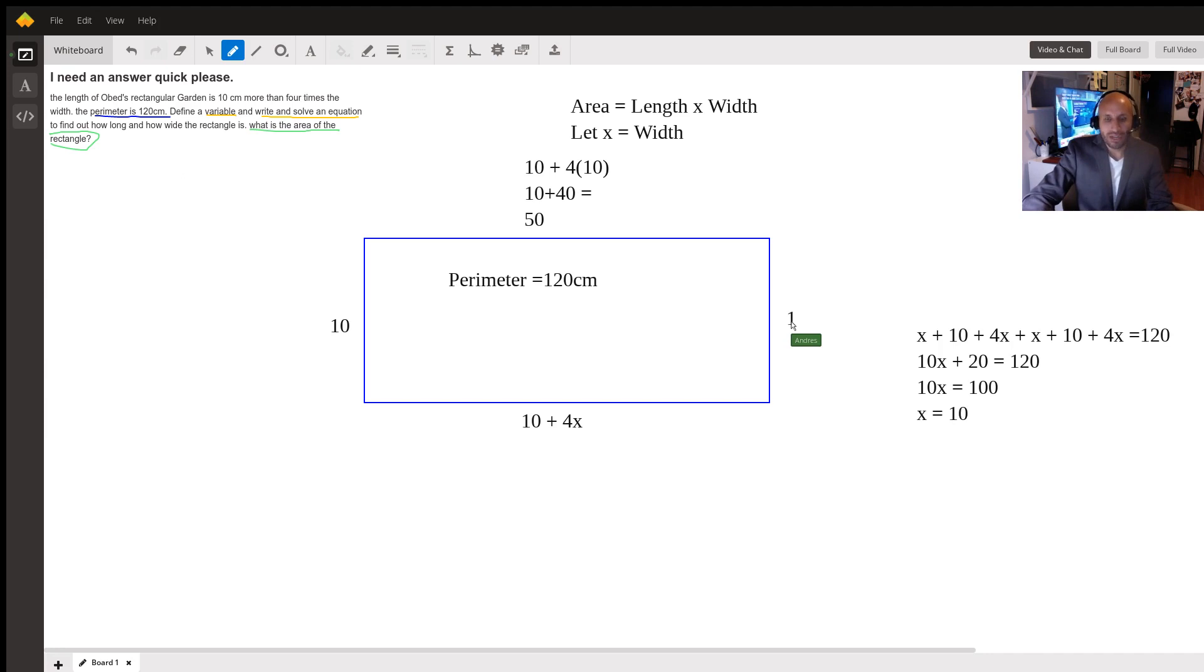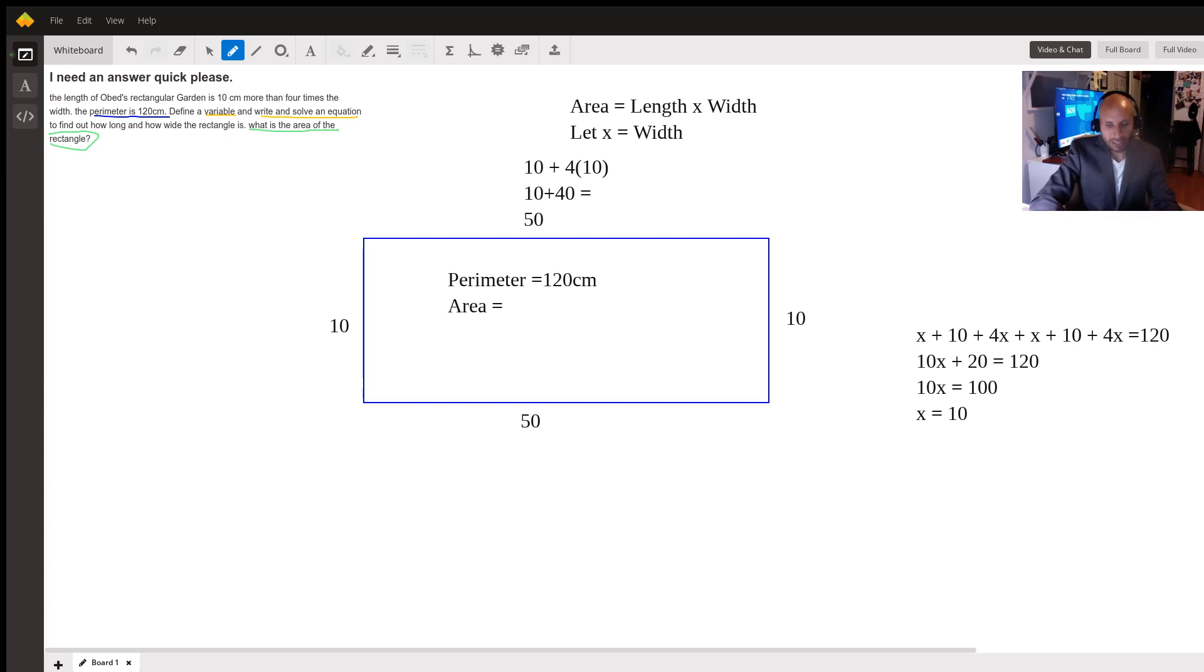Now I could go ahead and solve for everything. I mean, it's very simple, right? You know that this will equal 50 as well. But an area of a rectangle is the length times the width. So the final answer is going to be 10 times 50. And 10 times 50 gives you 500. So the area is going to equal 10 times 50, which equals 500.